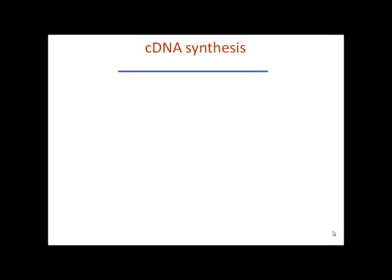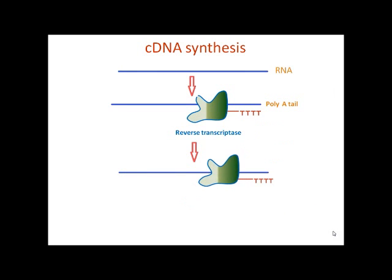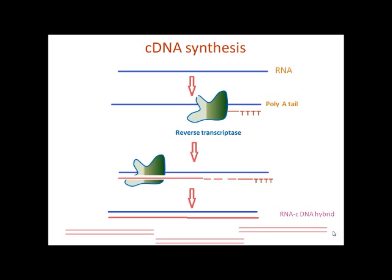The basic principle involved in cDNA synthesis is that single-stranded RNA has a poly-A tail at the 3-prime end. Oligo-dT sequences are used as primers and cDNA is synthesized using the RNA-dependent DNA polymerase enzyme, reverse transcriptase. By this way, single-stranded cDNA can be synthesized from RNA. Further, it can be converted into double-stranded cDNA by PCR. In identification of differential transcripts, single-stranded cDNA is used for RAPD analysis and double-stranded cDNA can be used for AFLP analysis.